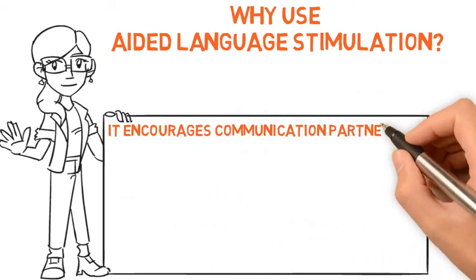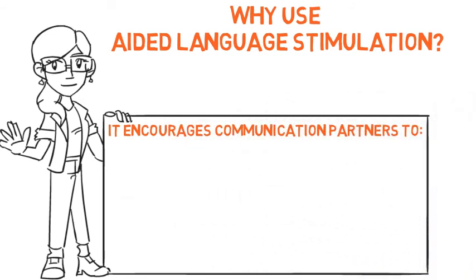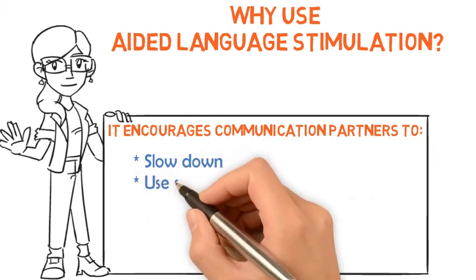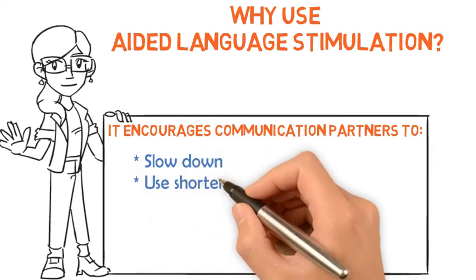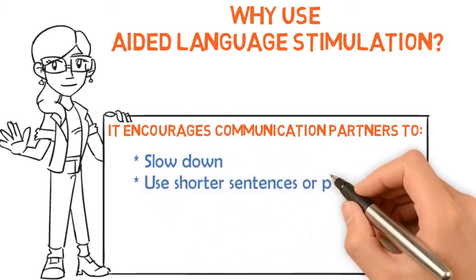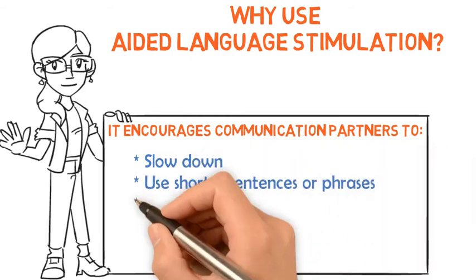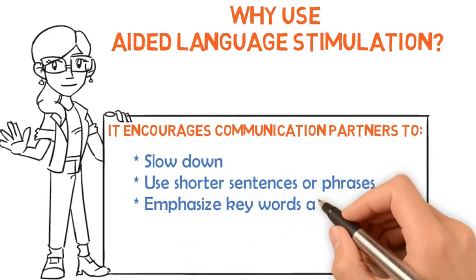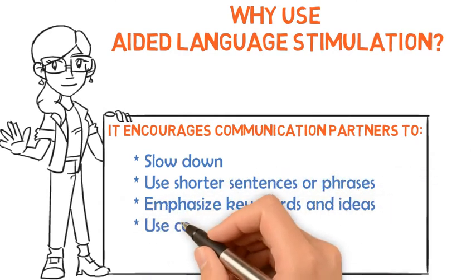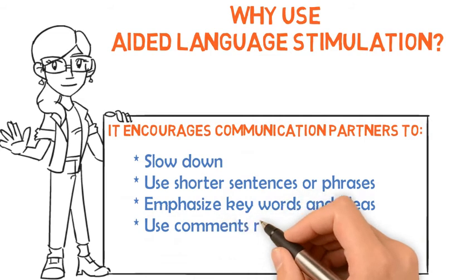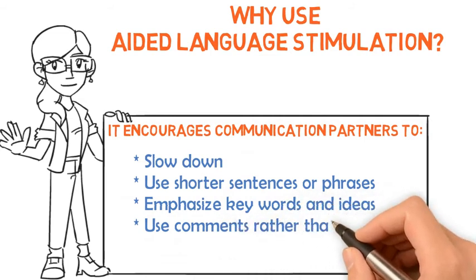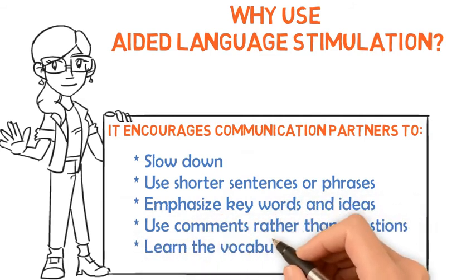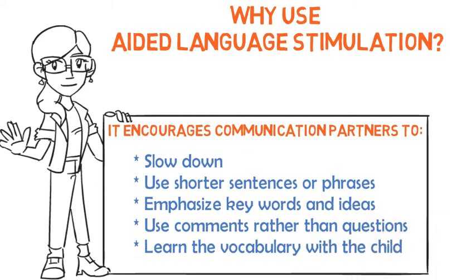Aided Language Stimulation encourages communication partners to: slow down, use shorter sentences or phrases, emphasize keywords and ideas, use comments rather than questions, and learn the vocabulary with the child.